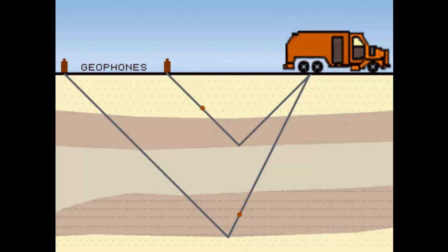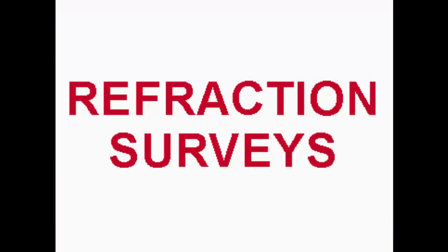Energy from the blast spreads in different directions and a part of it travels down through the subsurface. Wherever it encounters a change in density of rock, it gets reflected upward and gets recorded on the geophones. This process is repeated across a series of stations along a survey line.